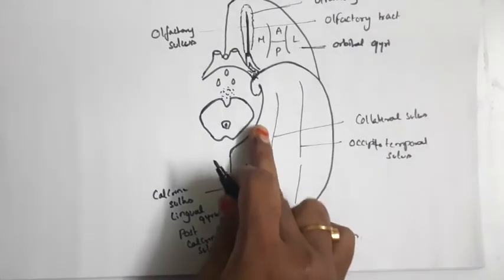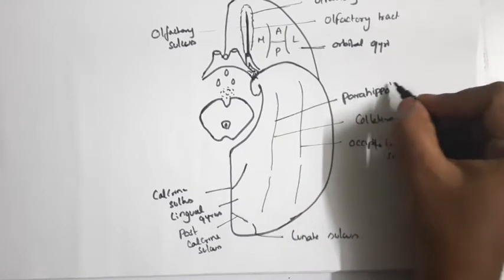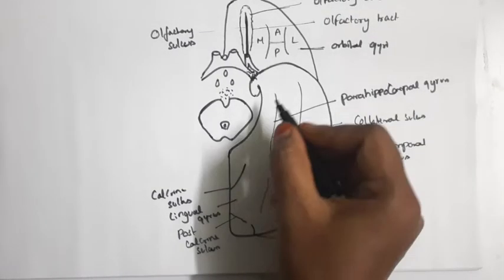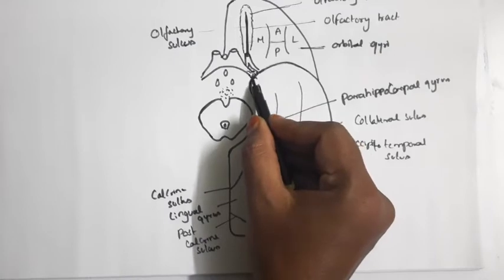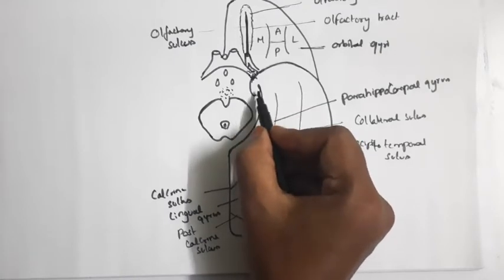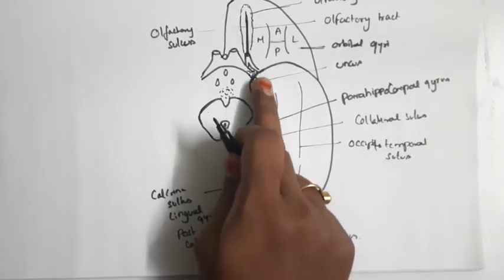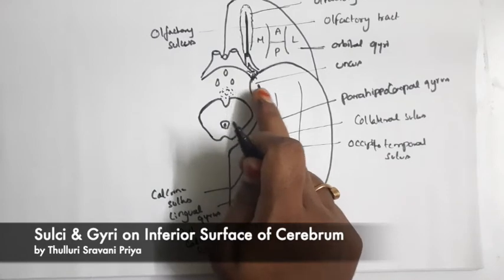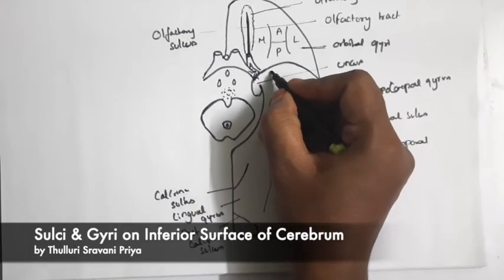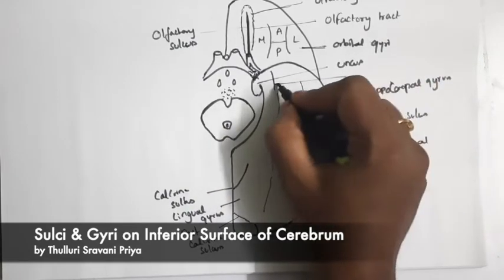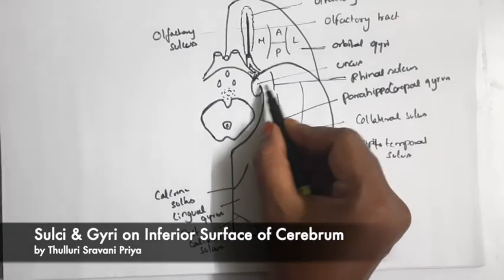Anteriorly, this lingual gyrus will continue as the parahippocampal gyrus. At its anterior end, this parahippocampal gyrus hooks backwards and medially. At this point, this bulged part is known as the uncus. Lateral to the uncus, it is limited by another sulcus known as the rhinal sulcus. So this is the uncus and this is the rhinal sulcus.